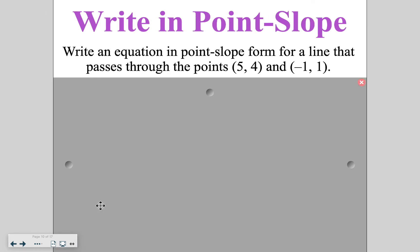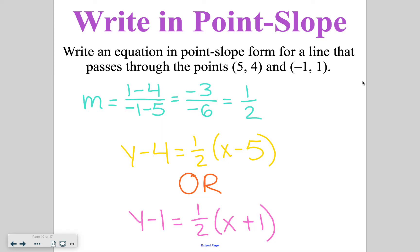Go ahead and write one of the two equations for the line that goes through these two points. We have a slope of one half, and then you can choose either the first point or the second point as the coordinates you are plugging in.